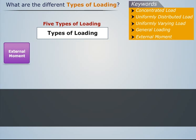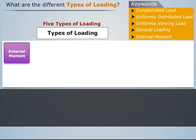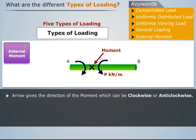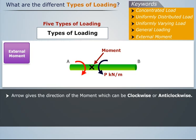And now, let us understand external moment. Consider a beam which is subjected to a moment. An external moment can be represented by a curved arrow as shown in the figure. Arrow gives the direction of the moment which can be clockwise or anticlockwise.